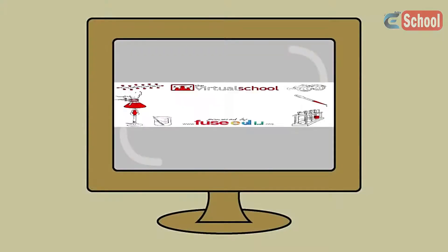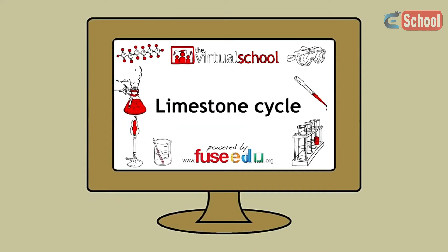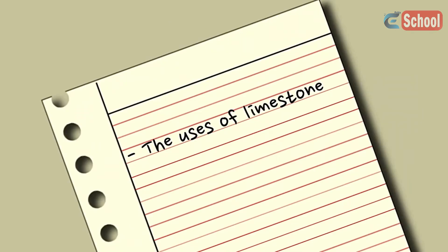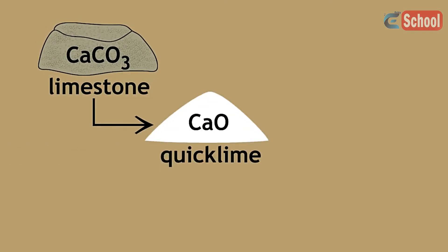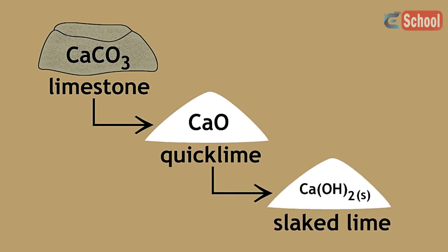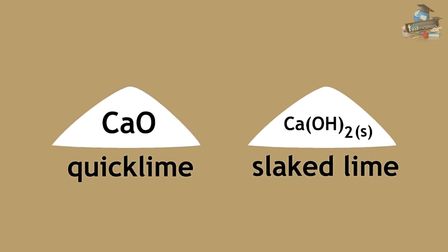We have previously learned about how limestone is formed and the limestone cycle. We will now learn about the uses of limestone and its many real-life applications. Limestone is the starting material in the production of quicklime, which is calcium oxide, and slaked lime, which is calcium hydroxide, as seen in our previous lesson. There are many more uses to limestone than simply producing quicklime and slaked lime.